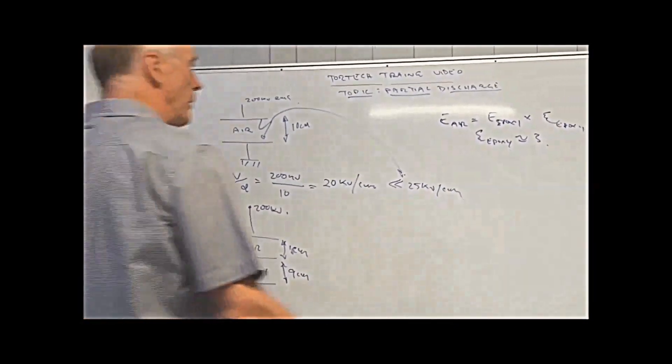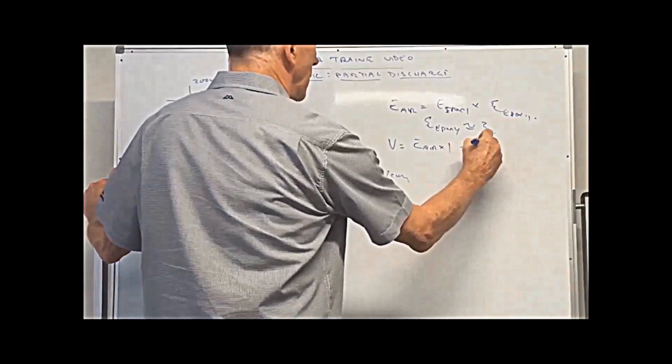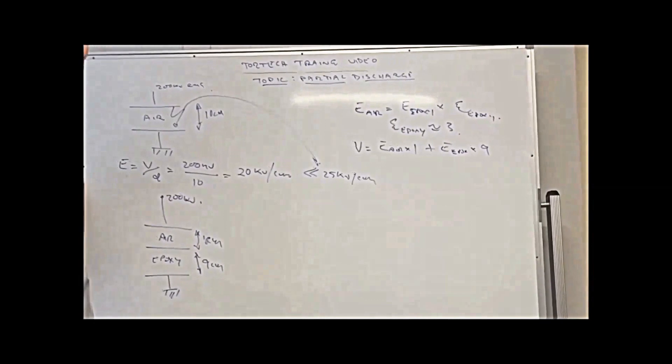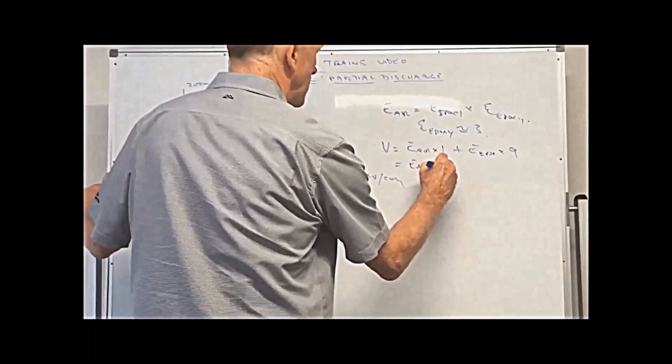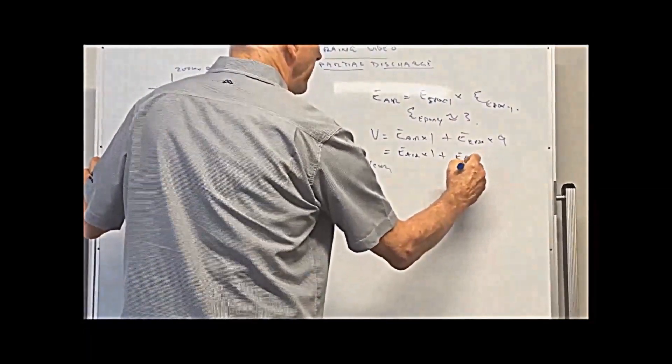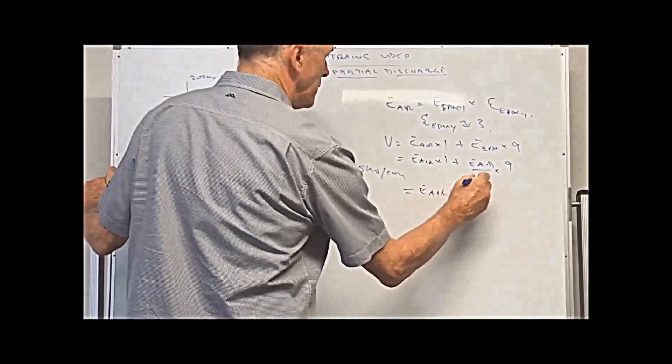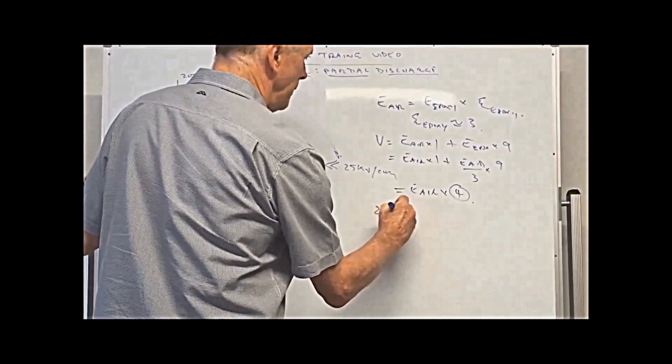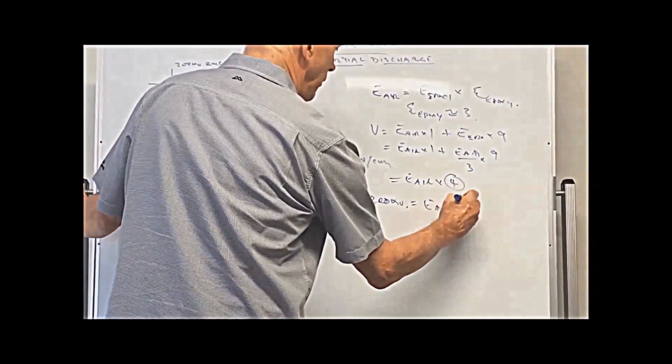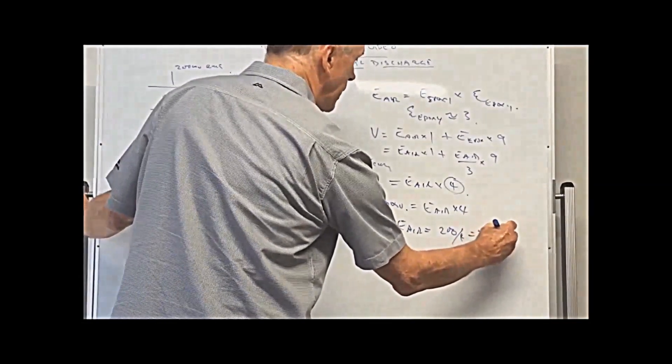So we've got the voltage equal to the stress in the air times one centimeter plus the stress in the epoxy times nine centimeters. So that then equals E_air times one plus E_air divided by three times nine. And that then gives you E_air times four. So if we've got 200 kV equal to the air stress, the stress in the air in kV per centimeter times four. So E_air equals 200 divided by four gives you 50 kV per centimeter.